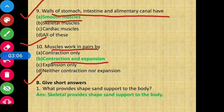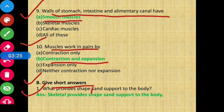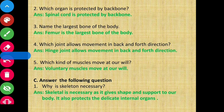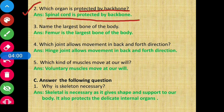Now let us see section B, which says give short answers. Question number 1: what provides shape and support to the body? Note that 'skeleton' is misprinted — skeleton provides shape and support to our body. Question number 2: which organ is protected by backbone? Spinal cord is protected by backbone.